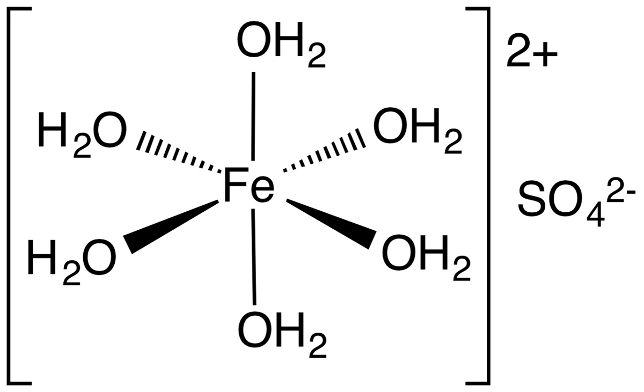All the iron(II) sulfates dissolve in water to give the same aquo complex, Fe(H2O)6^2+, which has octahedral molecular geometry and is paramagnetic.